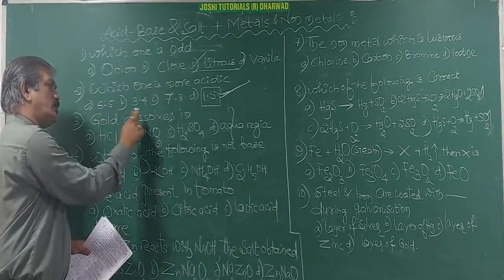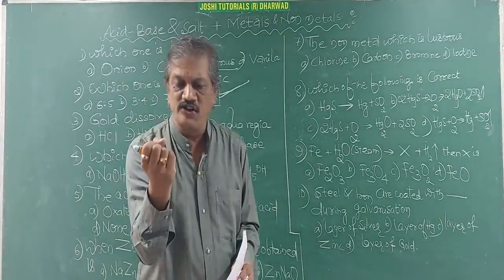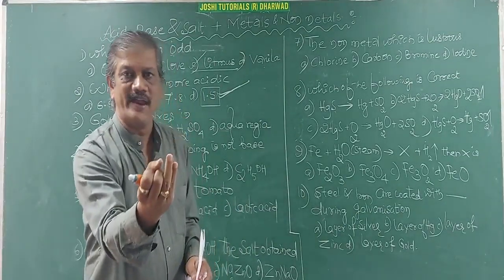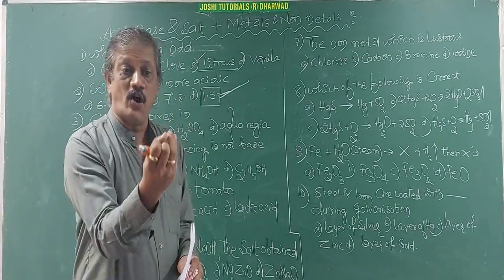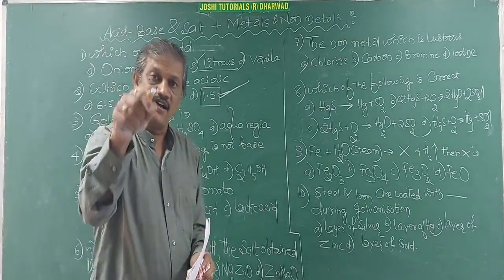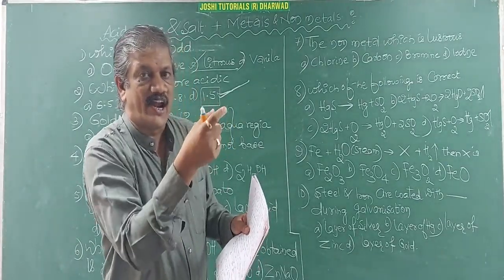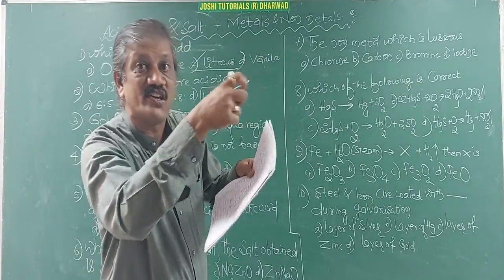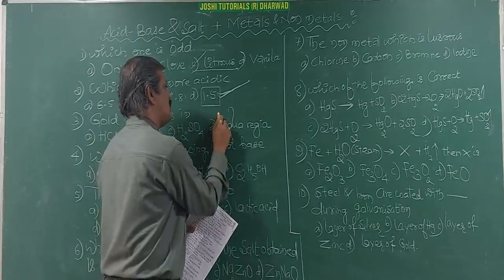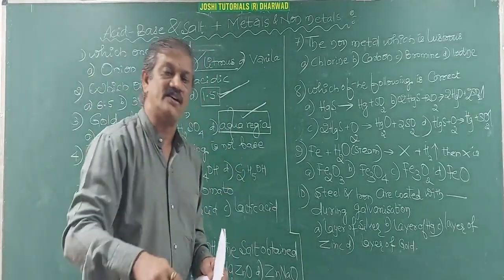Next, gold dissolves in... You must know the characteristics of gold. It will not dissolve in water, it is not going to dissolve in acids, it is not going to react with air. Then it is going to dissolve only in concentrated nitric acid and HCl mixture. There is a ratio. That mixture is called aqua regia. Gold dissolves in aqua regia.